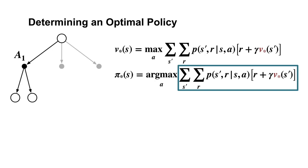Since we have access to V-star and P, we can then evaluate each term in the sum over S-prime and R. Let's say that for A1, the boxed term evaluates to 5.